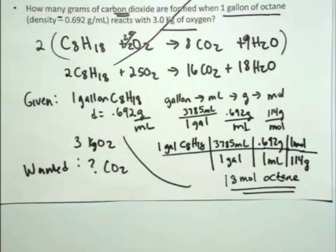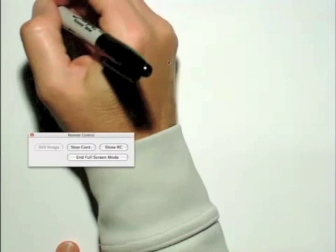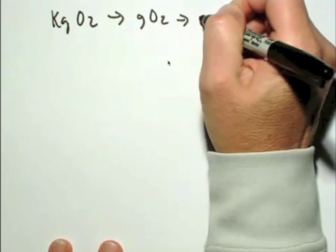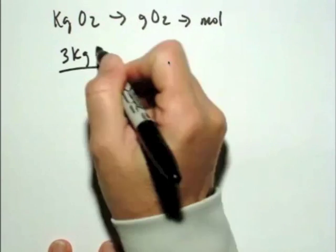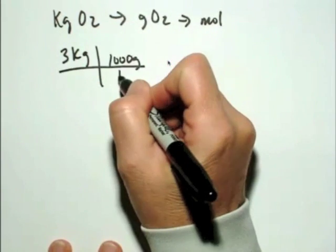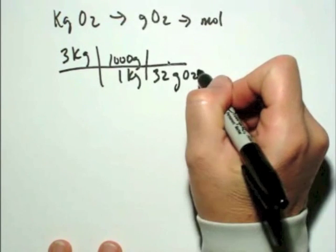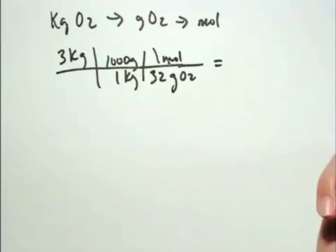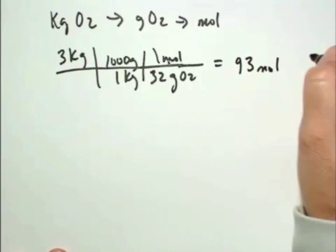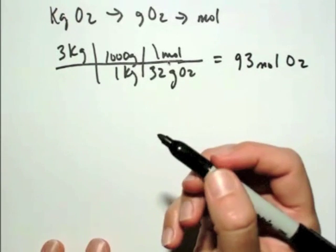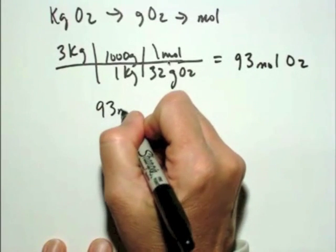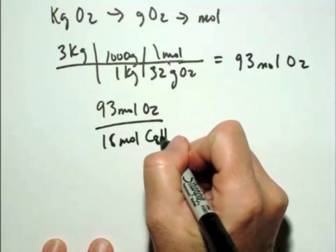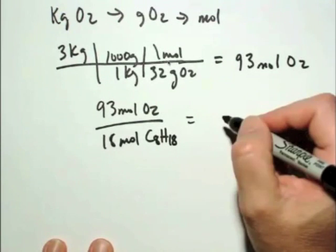Alright, now I need to calculate the number of moles of oxygen. If we're starting with 3 kilograms of oxygen, we just need to get to grams of oxygen, and then we can get to moles of oxygen. So in this case, 3 kilograms, there's 1,000 grams in one kilogram, and then the molar mass is 32 grams per one mole, and the number of moles of oxygen here is 93 moles of oxygen, given that mass of oxygen. So the ratio, then, of oxygen to octane, in this case is 93 moles of oxygen per 18 moles of octane, and that's going to give you a molar ratio of 5.2.